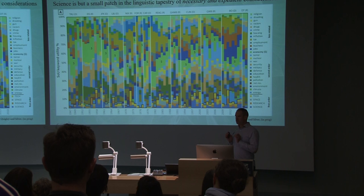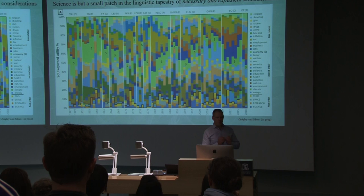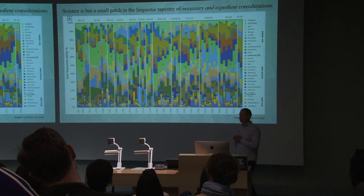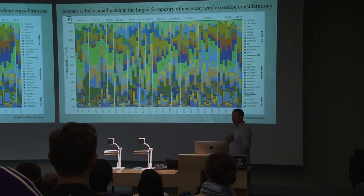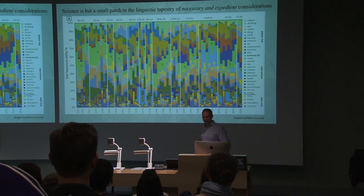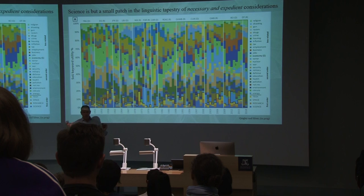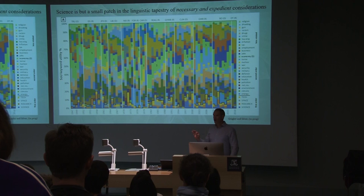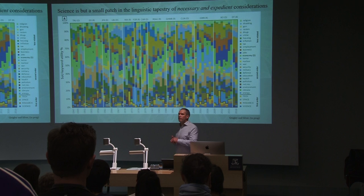One of the most important things that we have to realize is that science is not the be-all-end-all of all of Earth's problems. Science is but a small patch in the tapestry of what we might consider to be necessary and expedient considerations of our leaders. What this Afghan rug on the screen is trying to show you is some analysis that Jeremy and I have done where we counted keywords in every State of the Union address of every U.S. president from Truman to Trump — not manually; Jeremy wrote a code. For the keywords listed down the side, we're showing the percentage of those keywords through time, every year since 1947 to 2018.